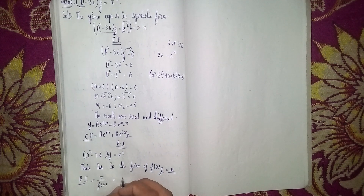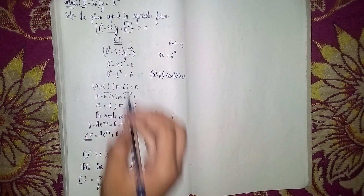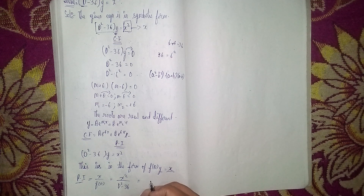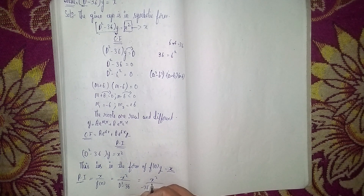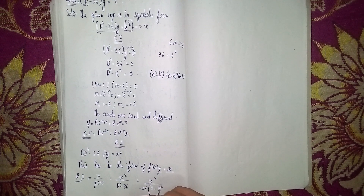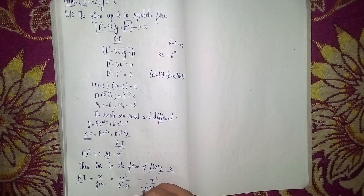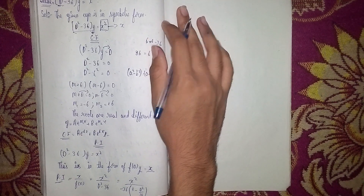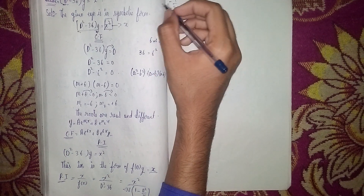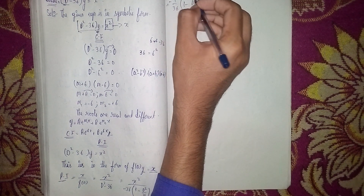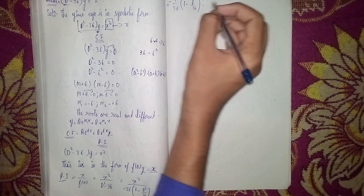Take -36 outside the denominator: PI = x² / (-36(1 - D²/36)) = -1/36 · (1 - D²/36)⁻¹ · x². Now applying the expansion (1 - D)⁻¹ = 1 + D + D² + ..., we get: -1/36 · (1 + D²/36 + (D²/36)²) · x².